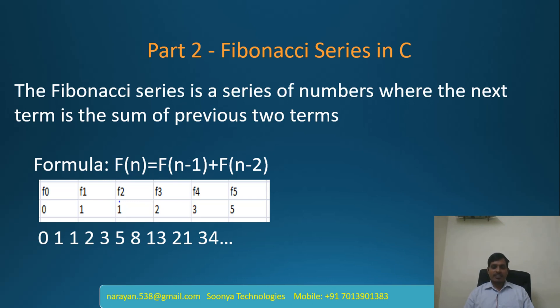What is Fibonacci series? The Fibonacci series is a series of numbers where the next term is the sum of the previous two terms. The formula to calculate Fibonacci series is f(n) = f(n-1) + f(n-2).